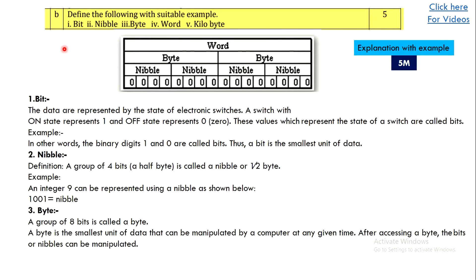The next question asks to define bit, nibble, byte, word, and kilobyte. Referring to this table makes it very easy to remember. A nibble is four bits. A bit is the representation of data by states one or zero. You can write a brief explanation of all of these — bit, byte, nibble, word, and kilobyte — and then give examples.